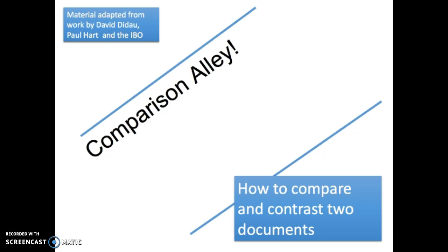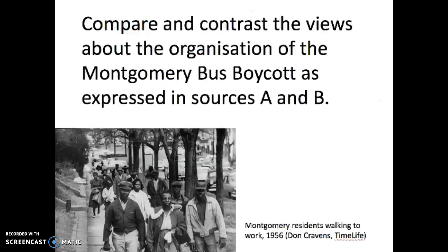There's also some information from the IBO in terms of some of the things from the mark schemes that were shared. This model will concentrate on Option 3 for Paper 1, which is the rights and protest option, having looked specifically at the USA and the Montgomery Bus Boycott.